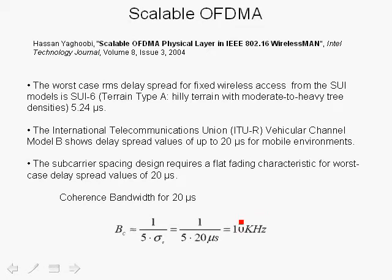What this says is that if we space the carriers in an OFDM system intended for a frequency-selective fading channel in which the RMS delay spread is 20 microseconds, then we need at least 10 kilohertz spacing between the carriers so that each carrier exhibits flat fading. In mobile WiMAX, the minimum spacing between OFDM carriers should be at least 10 kilohertz.